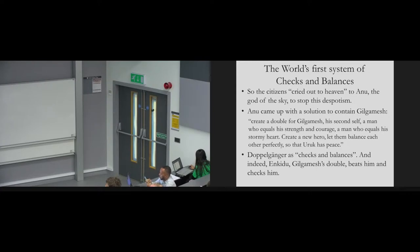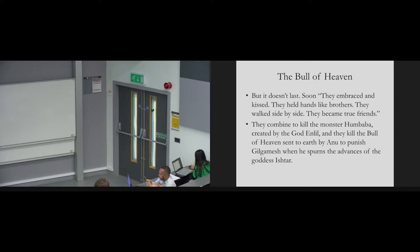Gilgamesh did great things. He built temples and walls. Here's the remains of one of the temples mentioned in the Gilgamesh epic. There were markets and trades. But there was a problem. Gilgamesh was out of control. He was ravishing women. He was tyrannizing people, trampling his citizens like a wild bull. So what do the people of Uruk do? They cry out to heaven. They cry out to Anu, the god of the sky, and say, Gilgamesh is great, but he's out of control. And Anu creates the world's first system of checks and balances.